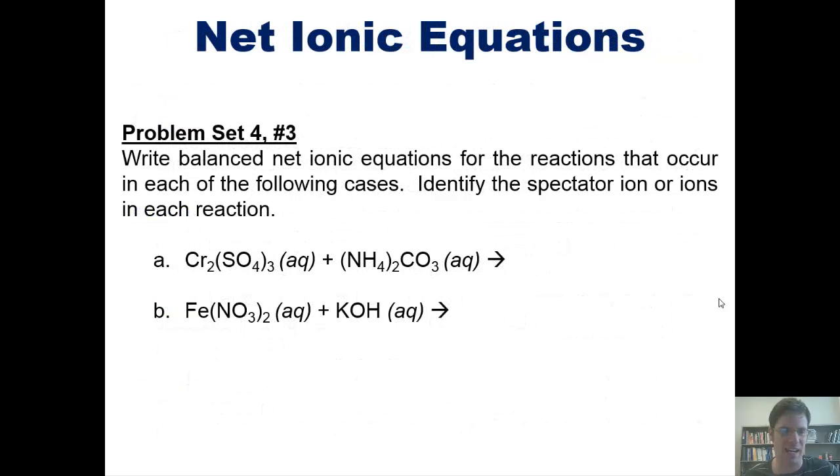Let's take a look then at an example. I want you to write balanced net ionic equations for the reactions that occur in each of the following cases. Then identify the spectator ion or ions in each reaction. Now I'm not going to show you how to do that here, but I will post a link to a separate video right here, which takes you to an explanation of how to do it, if you guys wish.